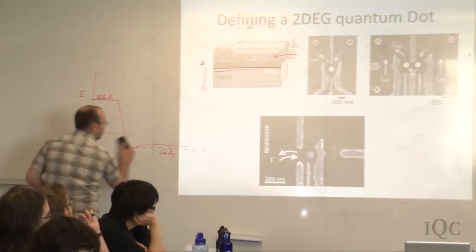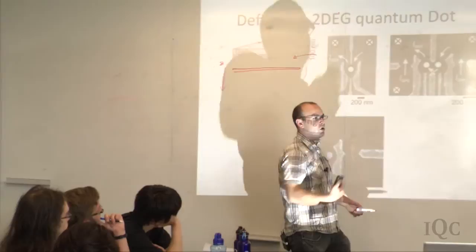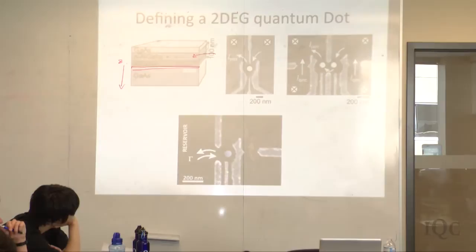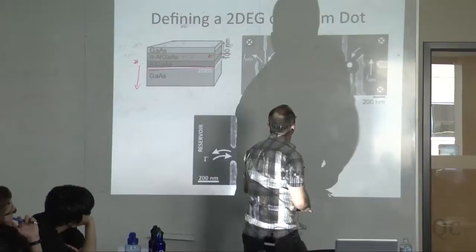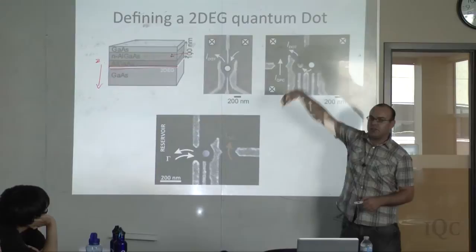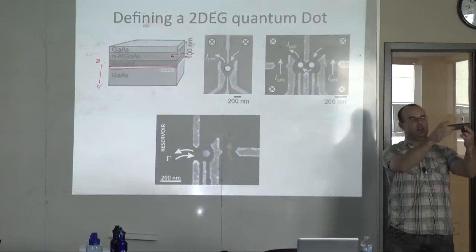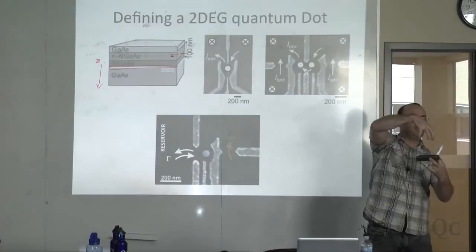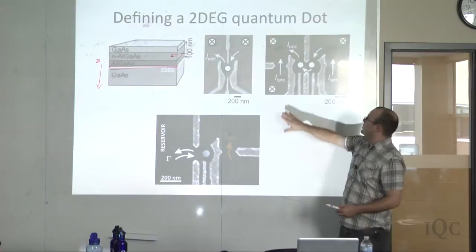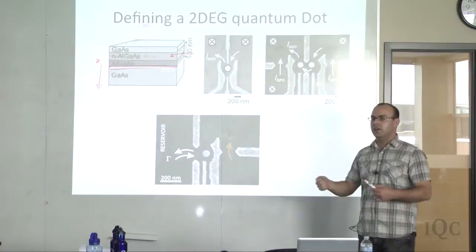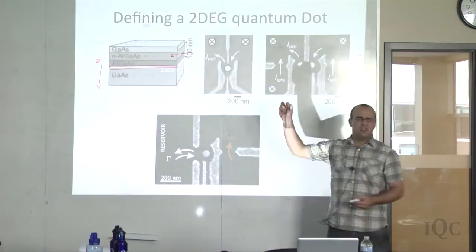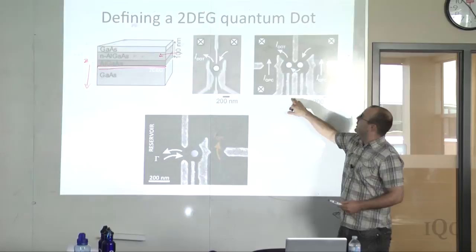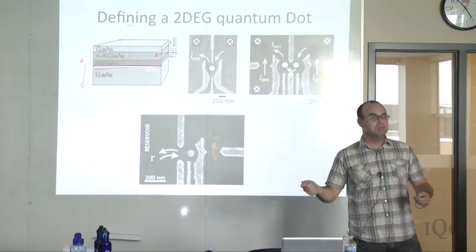Now we want to confine in two extra dimensions. We construct gates on top of the heterostructure — electrodes patterned in the clean room using a CAD program and electron beam lithography, normally done in titanium-gold or titanium-sapphire. Those electrodes are connected to a DC voltage source where we can apply DC voltage as we want.